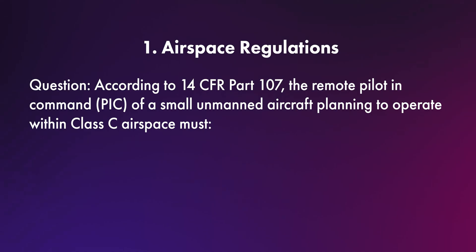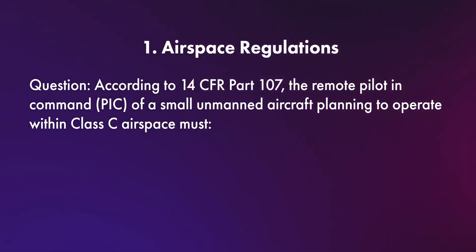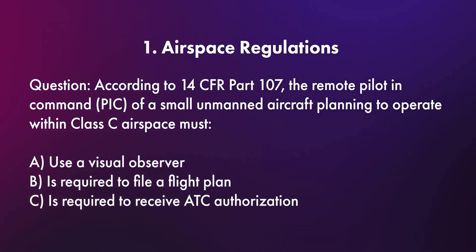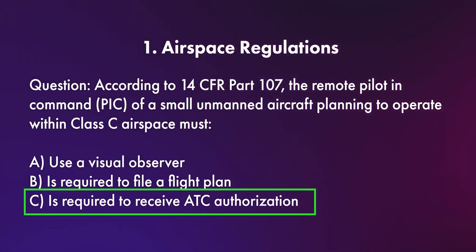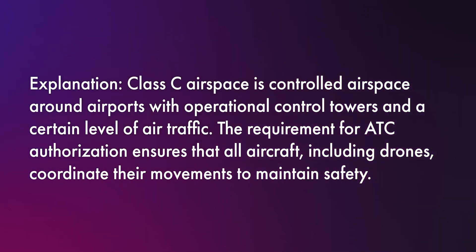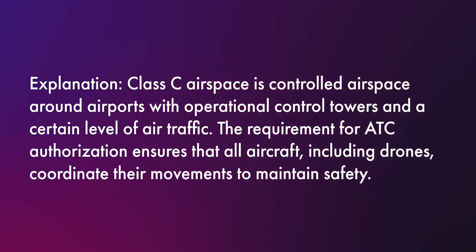Question number one has to do with airspace classification. You might see a question like: according to 14 CFR Part 107, the remote pilot in command of a small unmanned aircraft planning to operate within Class C airspace — A) must use a visual observer, B) is required to file a flight plan, or C) is required to receive ATC authorization. The correct answer is C, receive ATC authorization. Class C airspace is controlled airspace around airports, and the requirement for ATC authorization ensures that all aircraft, including drones, coordinate their movements to maintain safety.